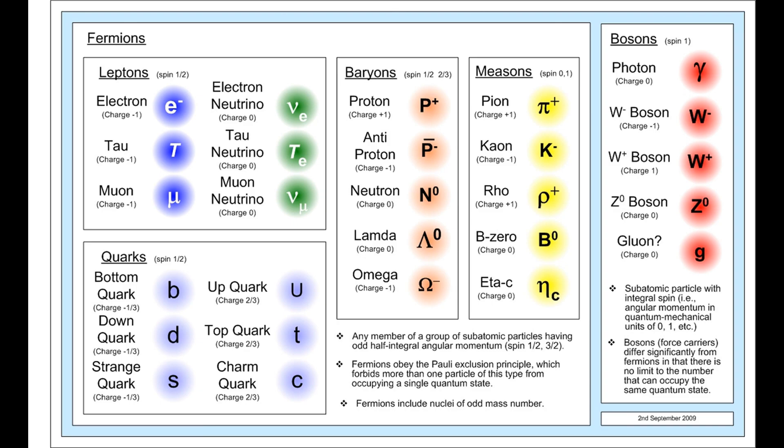A synthetic element is one of 24 chemical elements that do not occur naturally on Earth. They have been created by human manipulation of fundamental particles in a nuclear reactor, a particle accelerator, or the explosion of an atomic bomb.